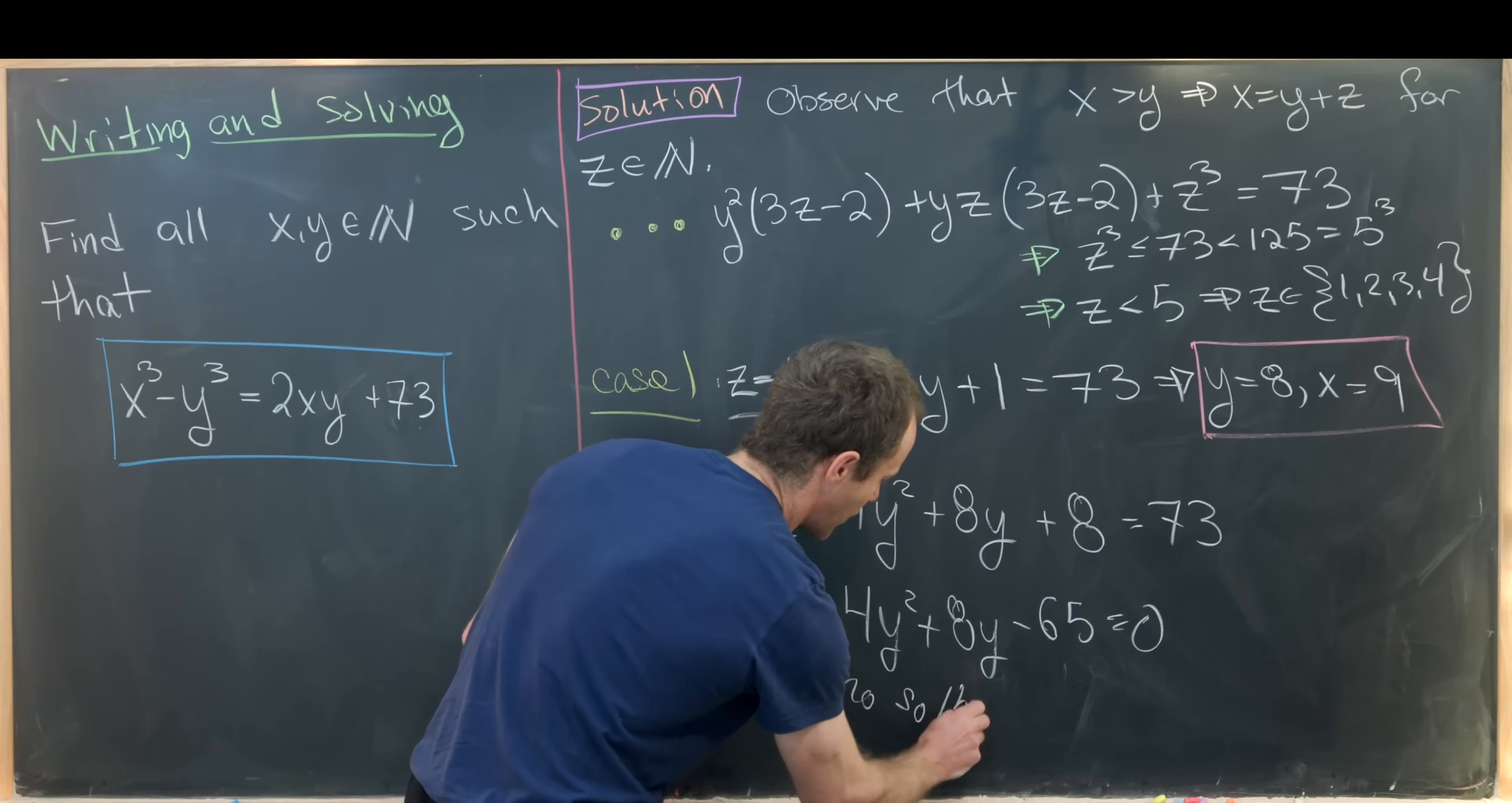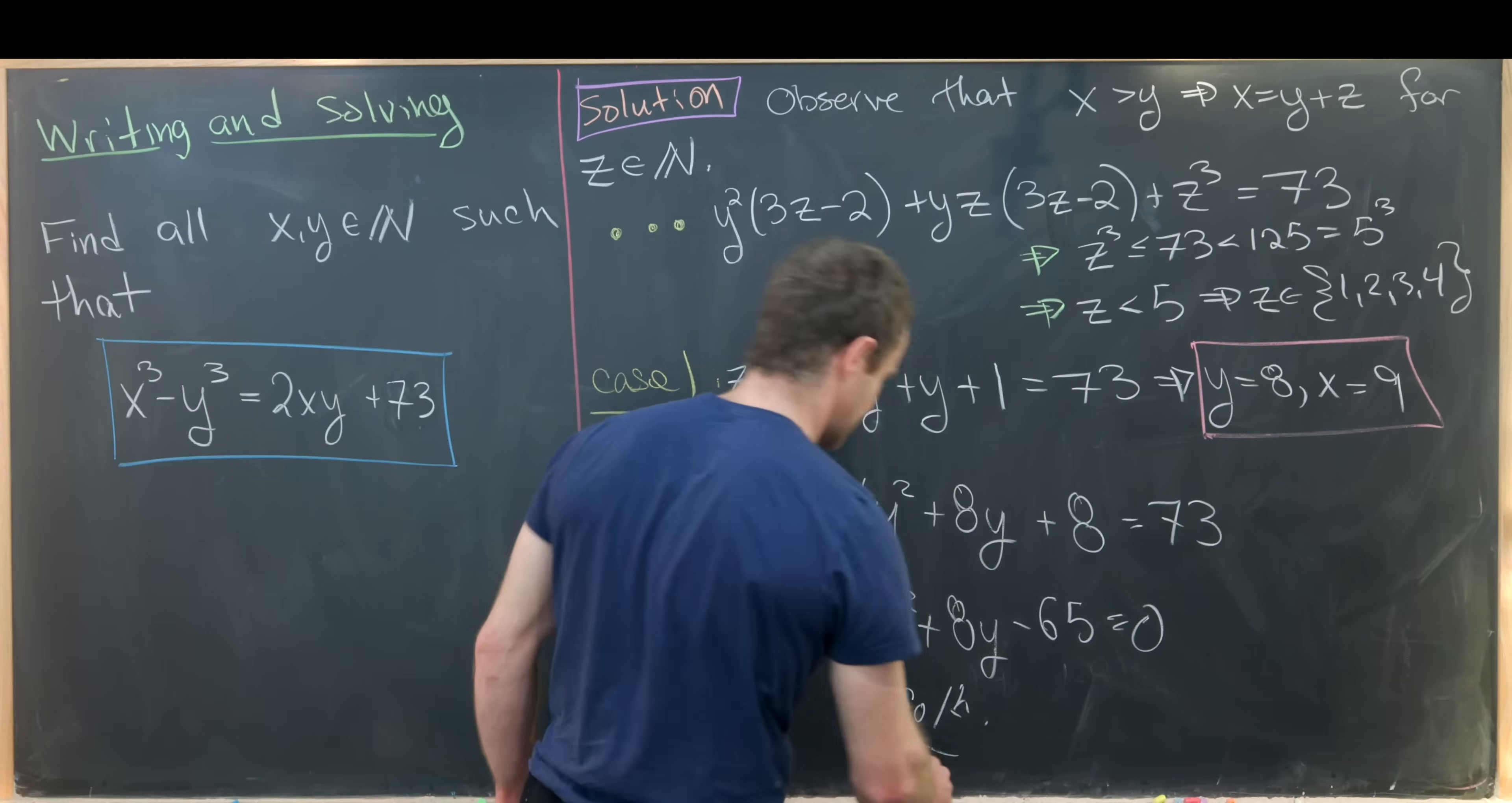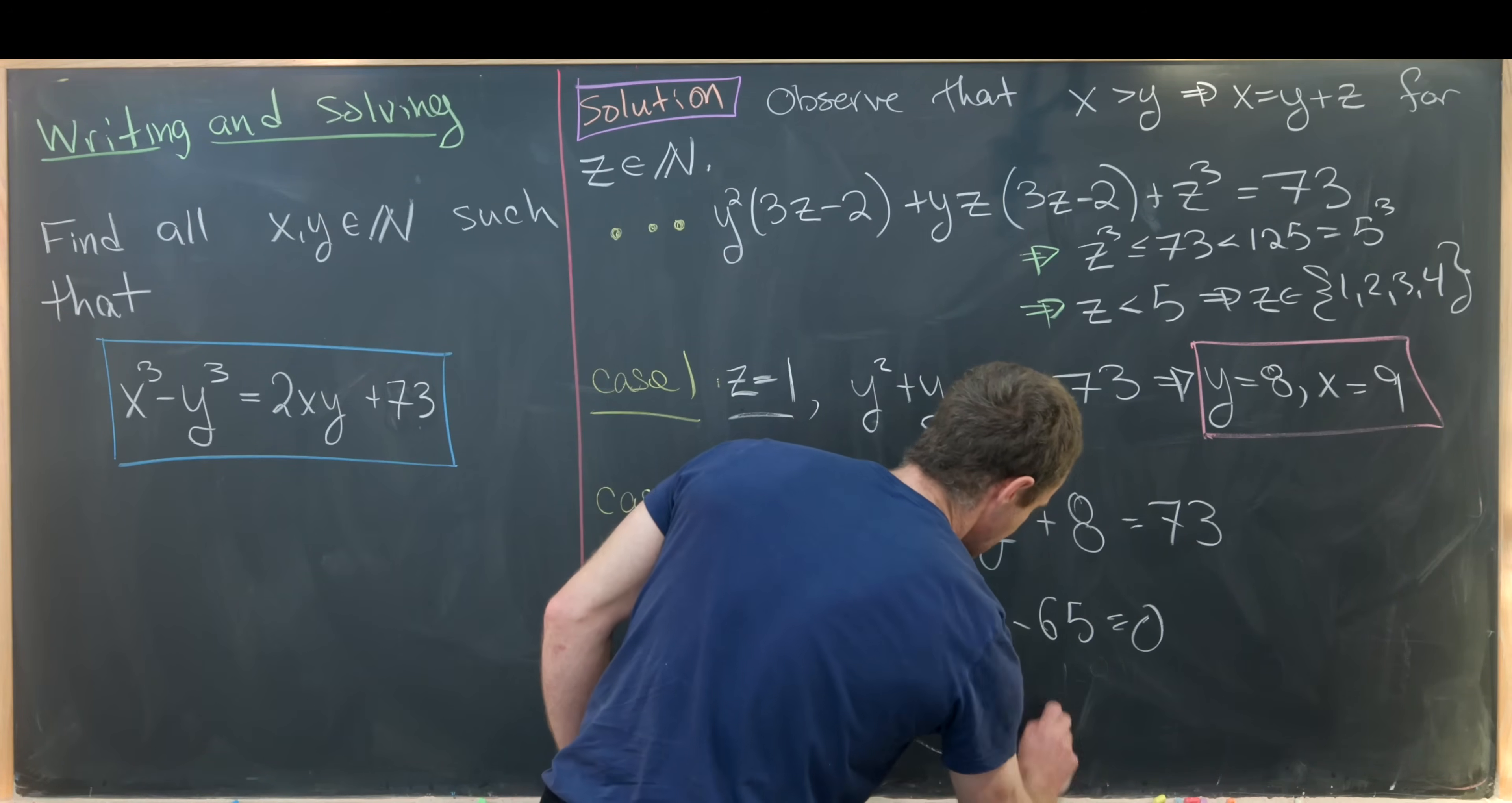Now you can easily check here that there are no solutions in the natural numbers. So I'll let you guys check that. You can just do it maybe with the quadratic formula. You'll notice that the discriminant is not a perfect square.